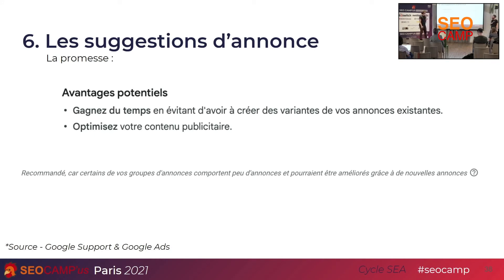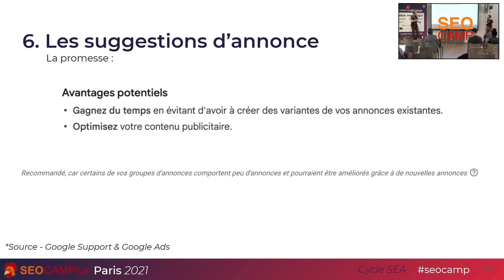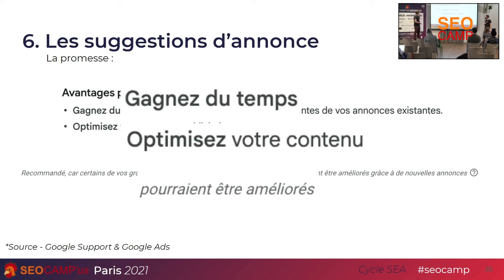La promesse de Google, c'est qu'on va gagner du temps — écrire du copie, c'est un vrai métier, et tout le monde n'a pas l'occasion de le faire, surtout les annonceurs qui n'ont pas d'agence. L'optimisation du contenu publicitaire, c'est un peu un mot valise. Et donc : les annonces textuelles qui pourraient être améliorées — il dit le conditionnel. C'est assez amusant d'analyser comment il nous parle. Voici des exemples d'annonces automatisées.